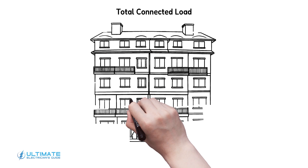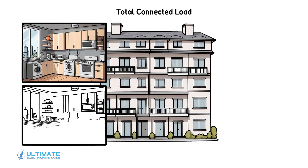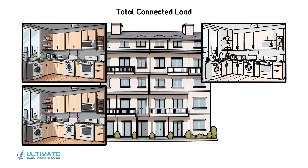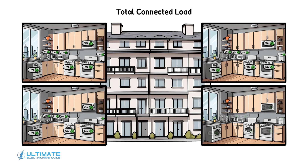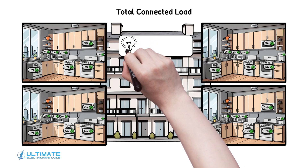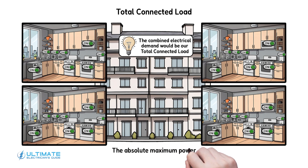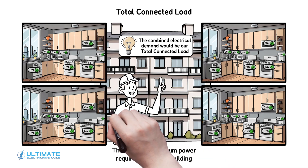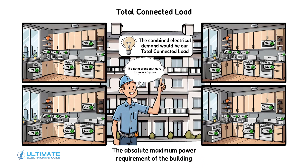Let's start with the total connected load. Imagine an apartment complex where each unit has a variety of electrical appliances: air conditioners, electric clothes dryers, cooktops, and more. If every appliance in every unit were to run at full power simultaneously, the combined electrical demand would be our total connected load. This number represents the absolute maximum power requirement of the building, but it's not a practical figure for everyday use, because it is highly unlikely all these devices will be in full operation at the same time.